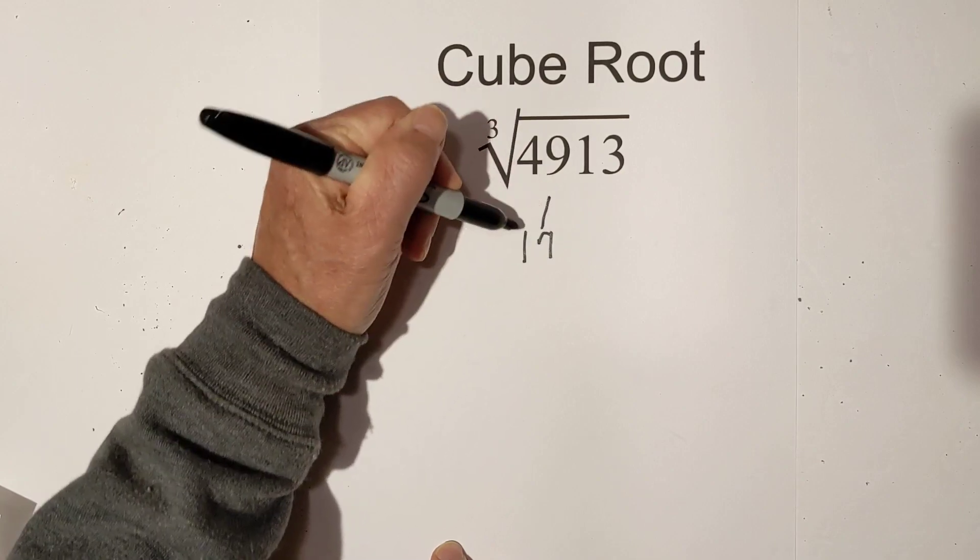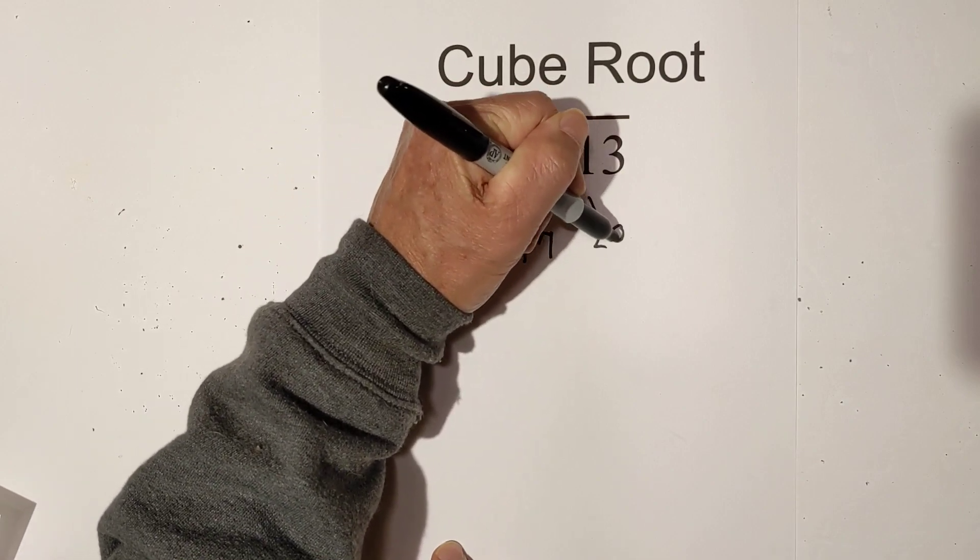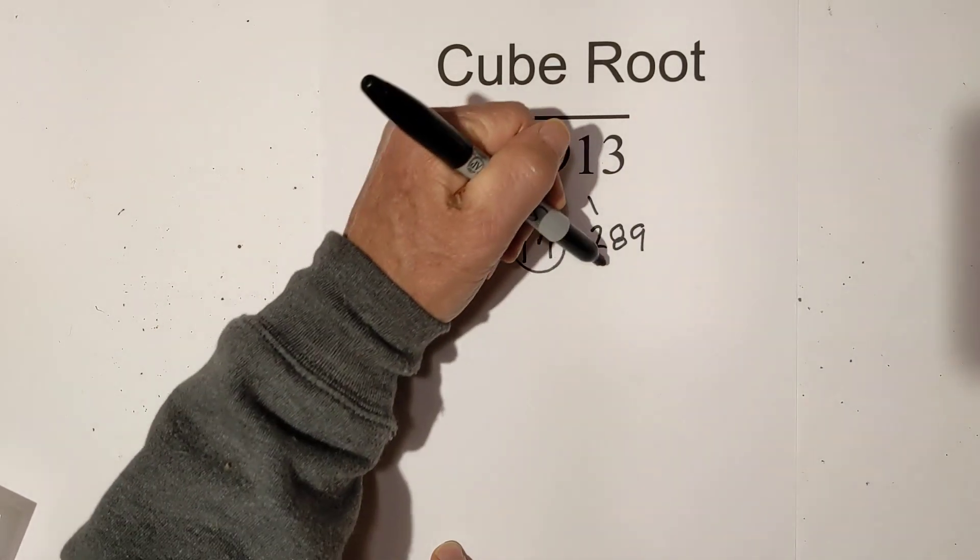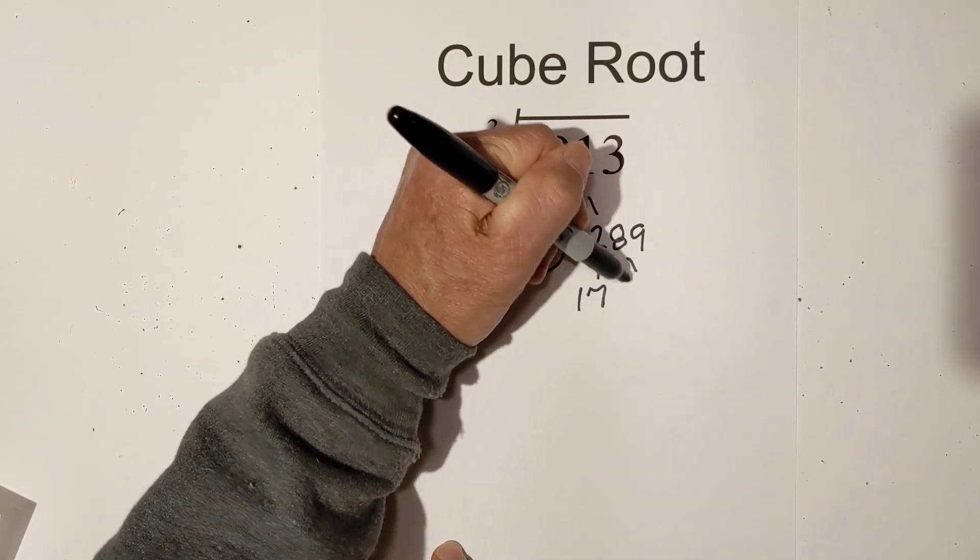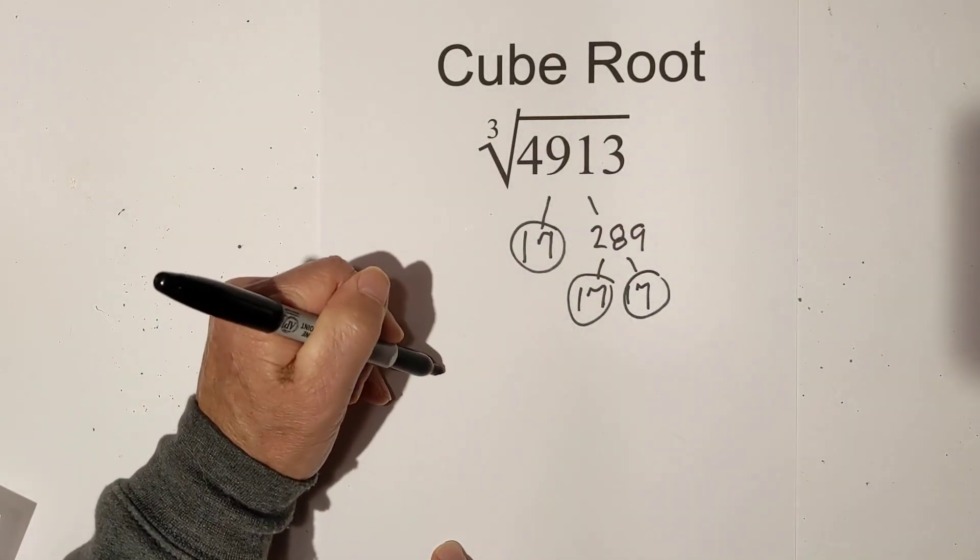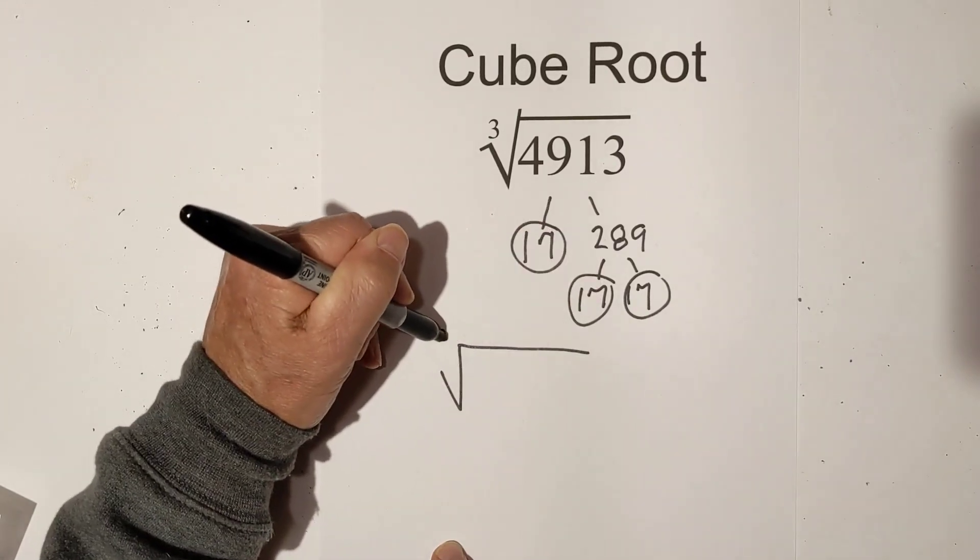This factor tree is not real large, it's 17 times 289. Circle 17 because it is prime, and now 17 times 17 equals 289. Now what you can do is place them under the cube root sign.